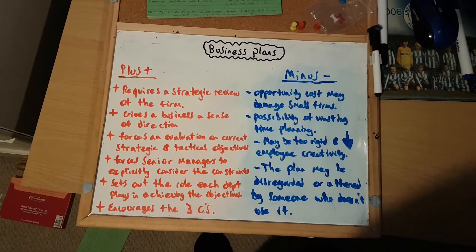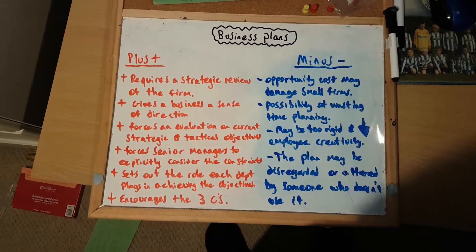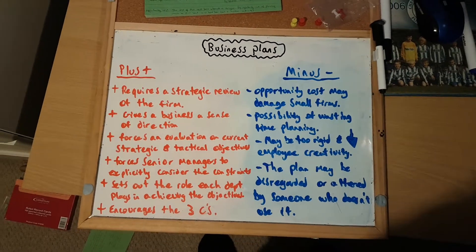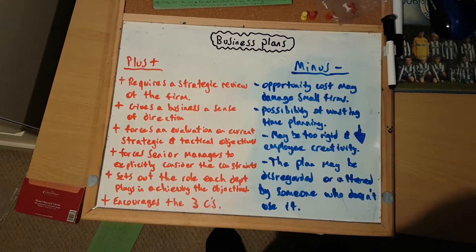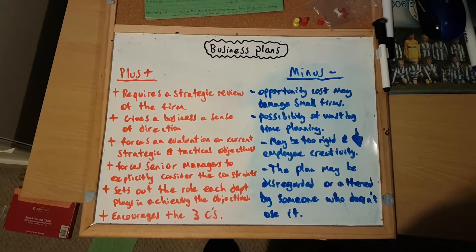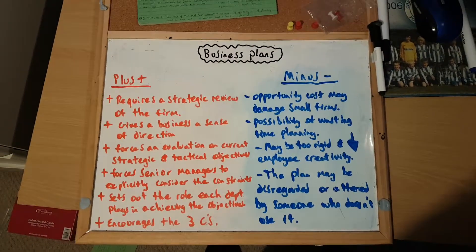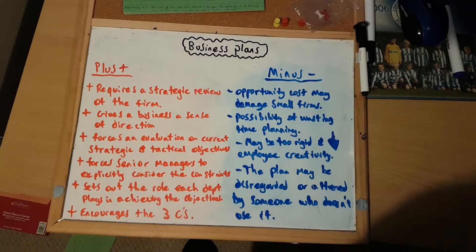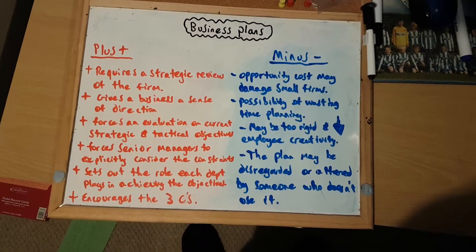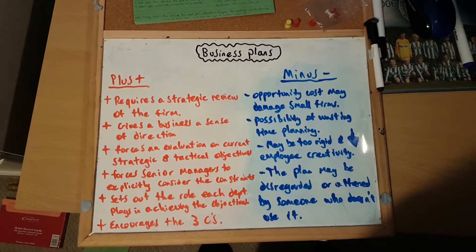Another plus is that it gives a business a sense of direction. So, with a business plan, the whole firm, the whole organisation has one objective — one large objective which will be narrowed down into loads of smaller ones so it can achieve an aim. Usually this would be something like achieving a larger market share or diversifying with a new product range.